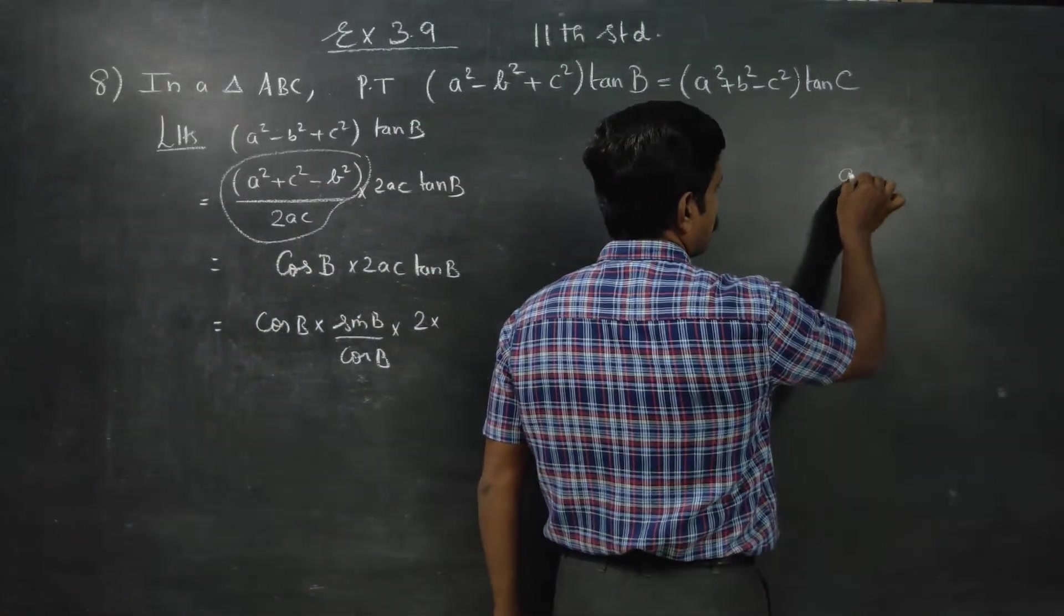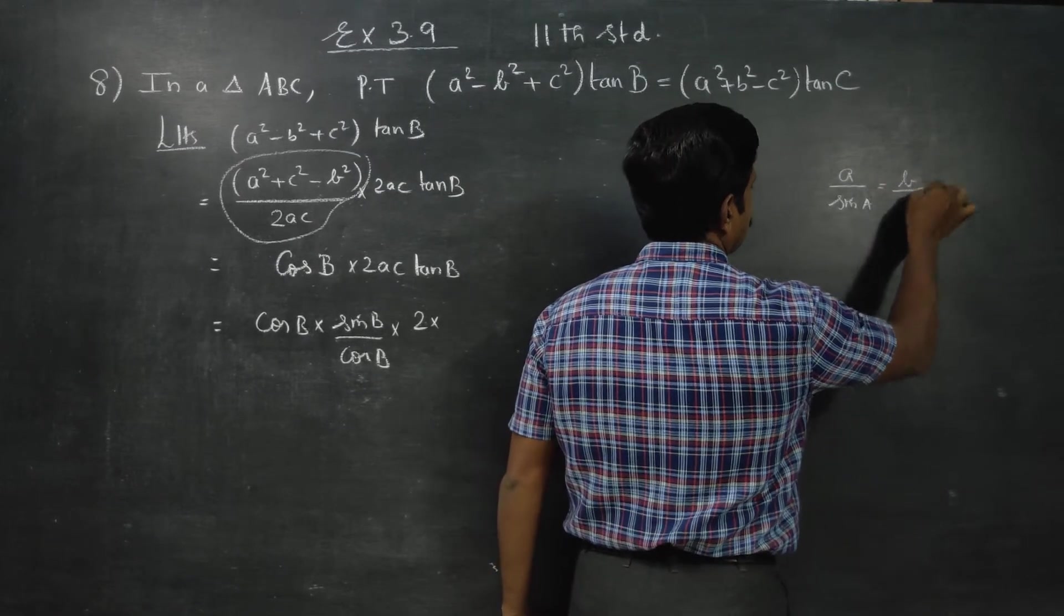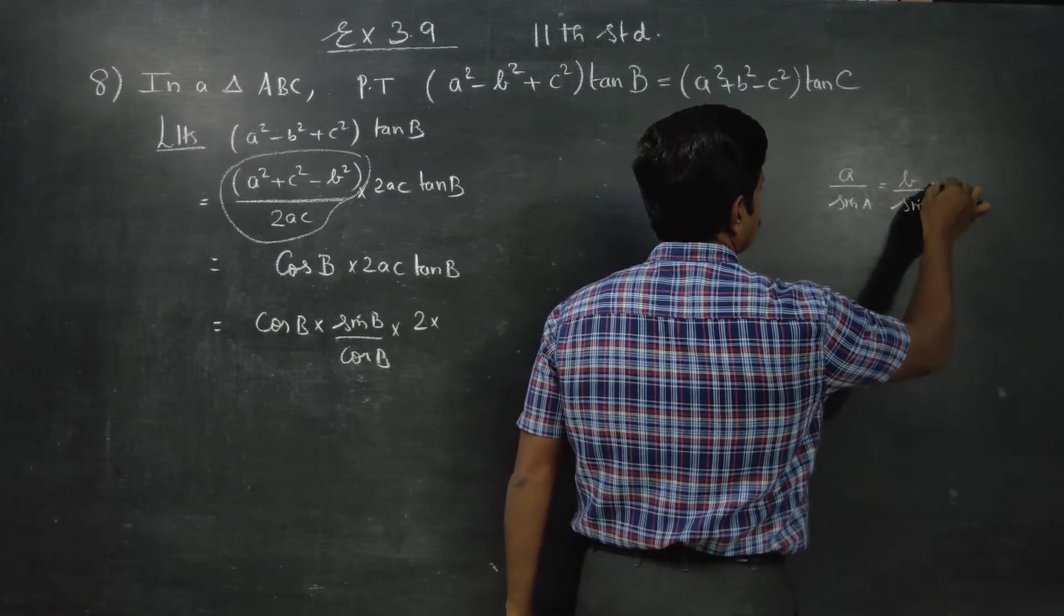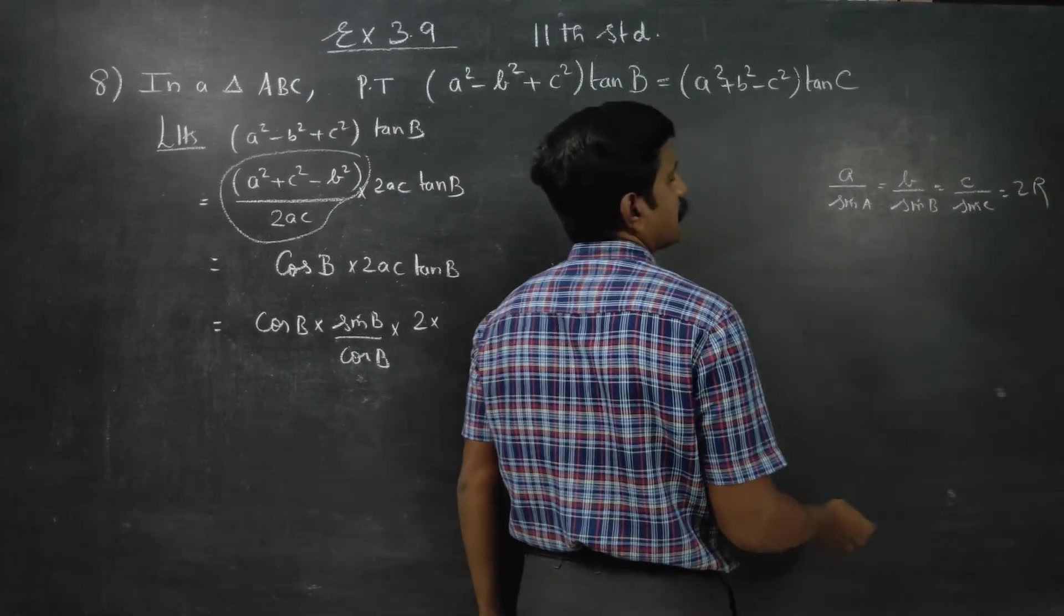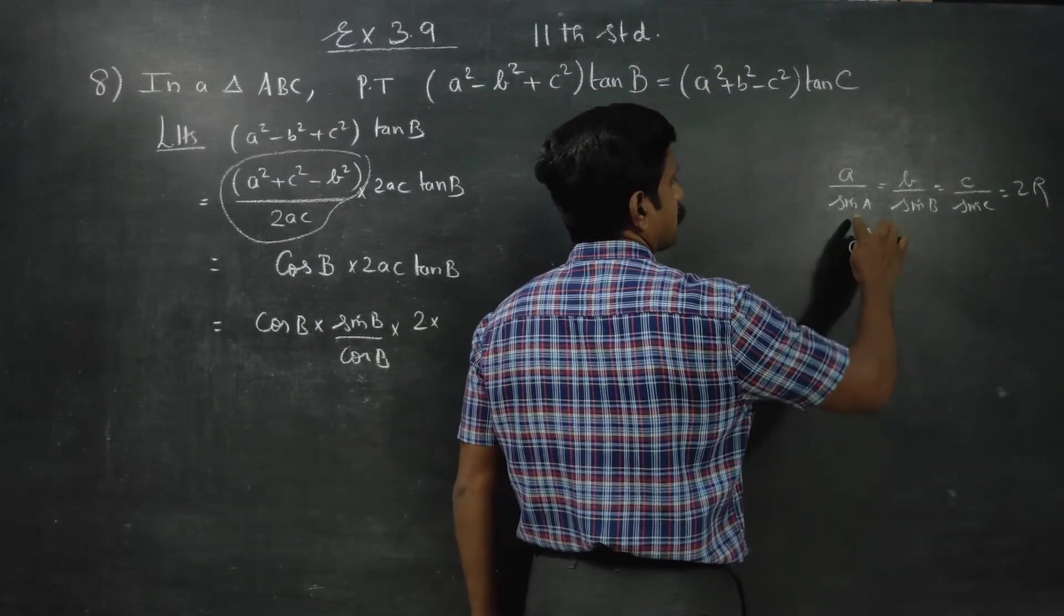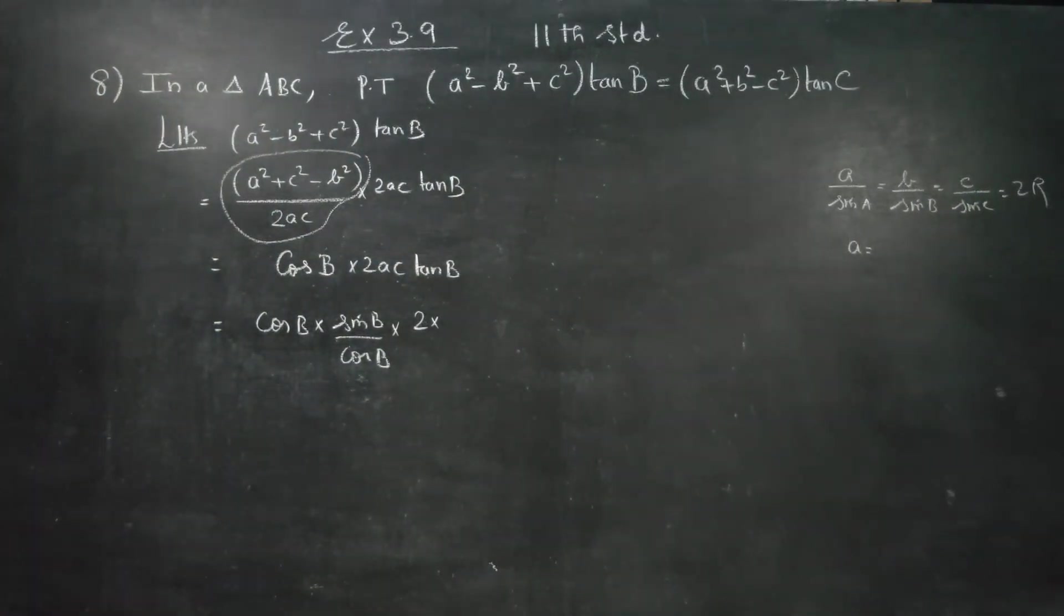Again, A by sin A equals B by sin B equals C by sin C equals 2R, correct? So what is my A? 2R sin A. What is my B? 2R sin B. What is my C? 2R sin C.